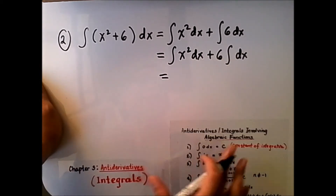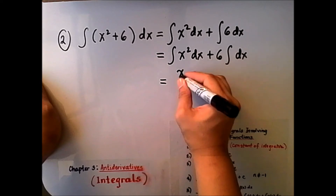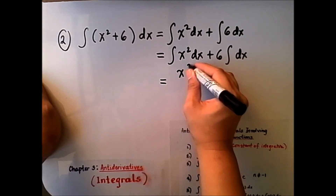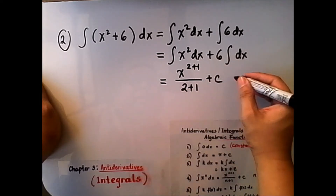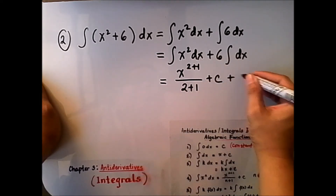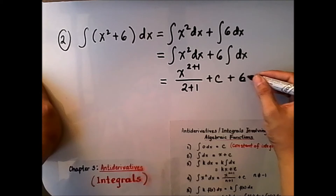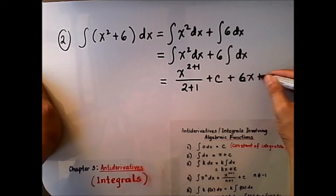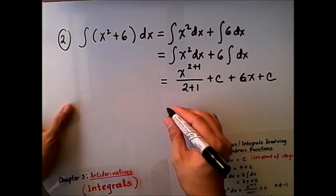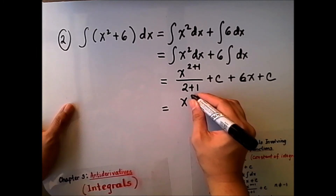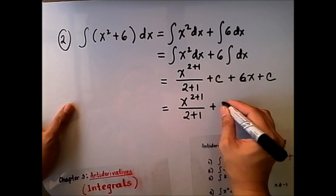Let us evaluate this further. Applying the laws we have, this becomes x raised to the power of 2 plus 1 over 2 plus 1, plus c. Then for the second part, this becomes plus 6 — since it is a constant — so 6x plus c.